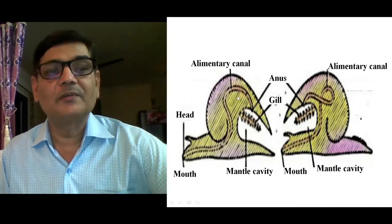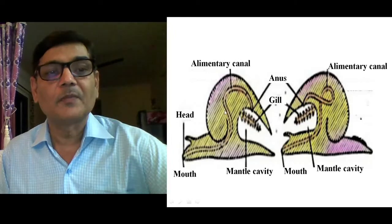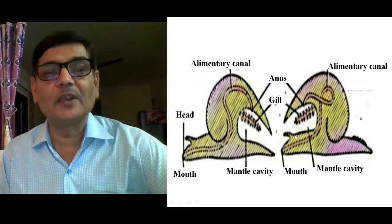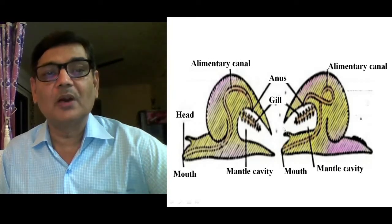Because of the twisting of visceral organs — the structures present in the inner portion — they start moving to the anterior side and rotate 180 degrees. During this process, the mantle cavity also gets shifted to the anterior side. In the adult form, the alimentary canal has twisted 180 degrees completely, the mantle cavity has come close to the mouth, and the gills, which were posteriorly directed, are now present on the anterior side.